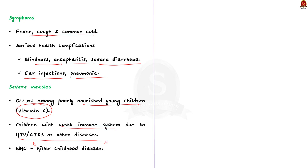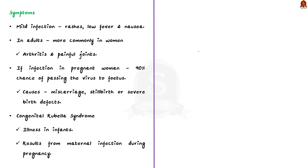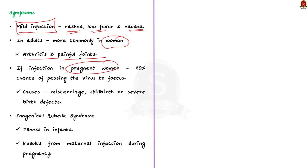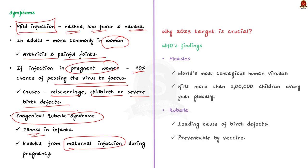Rubella is caused by the rubella virus. It is also a contagious infection spread through air by droplets from an infected person to an uninfected person. Note that humans are the only known host to the rubella virus. Rubella is said to be a mild infection — symptoms include rashes, low fever, and nausea. In adults, women are more commonly affected and develop arthritis and painful joints. When a woman is infected with the rubella virus early in pregnancy, she has a 90% chance of passing the virus onto her fetus. This can cause miscarriage, stillbirth, or severe birth defects, known as congenital rubella syndrome — an illness in infants that results from maternal infection with rubella during pregnancy.